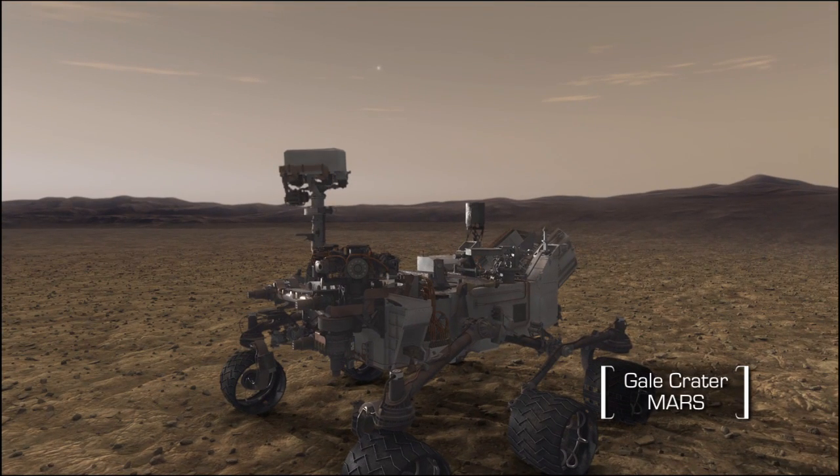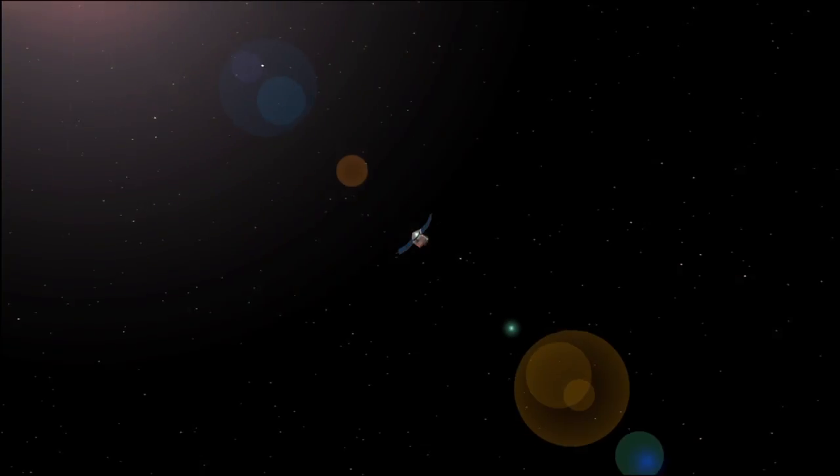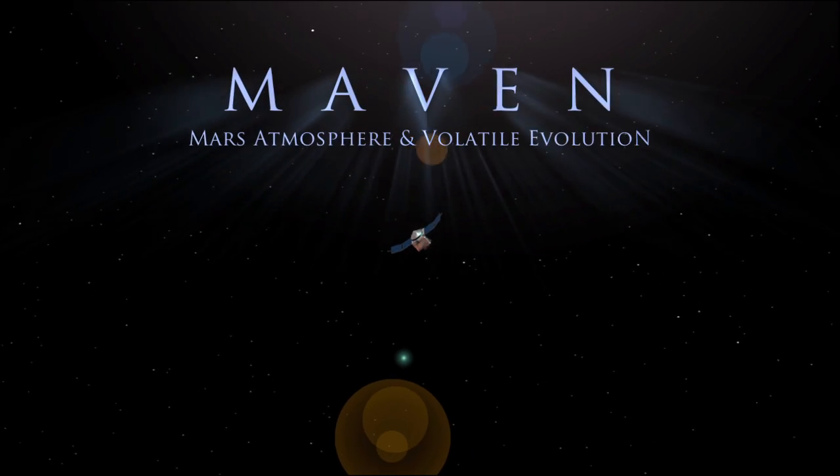Unlike robotic rovers which land on the Martian surface, the Mars Atmosphere and Volatile Evolution mission, MAVEN, will go to work in orbit.